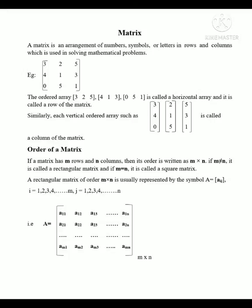The number 325413015 is a horizontal array. Array means arrangement. Horizontal array means row. Vertical array — for example, 340215531 — is a vertical ordered array, which is a column of a matrix. Numbers and symbols make up the rows and columns.